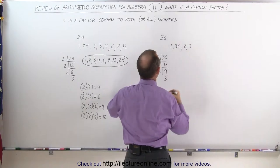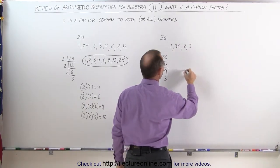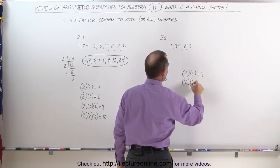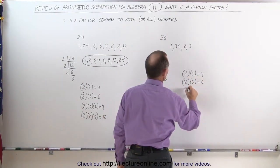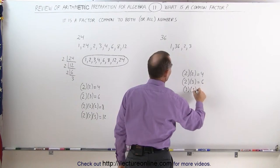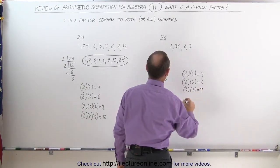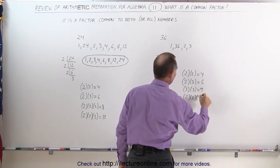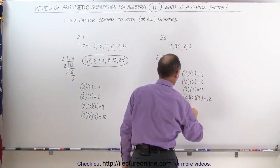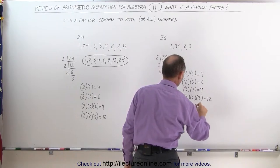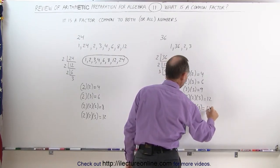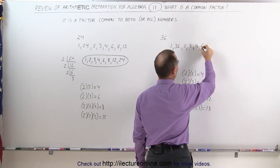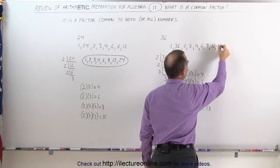Those are two factors: 2 and 3. Now for all the combinations: 2 times 2 equals 4, 2 times 3 equals 6, 3 times 3 equals 9, 2 times 2 times 3 equals 12, and 2 times 3 times 3 equals 18. So we get the additional factors 4, 6, 9, 12, and 18.